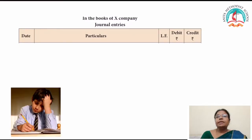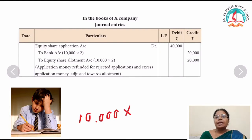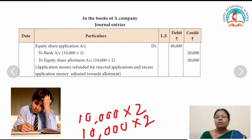The next one is for the refund of rejected applications. How many shares were rejected? 10,000 shares. Journal entry: equity share application account debit — to bank: 10,000 into 2 = 20,000. And in the sum it is given that excess application money has been adjusted with allotment money, so to equity share allotment: 10,000 into 2 = 20,000. Total: 40,000. Application money refunded for rejected applications and excess application money adjusted towards allotment.